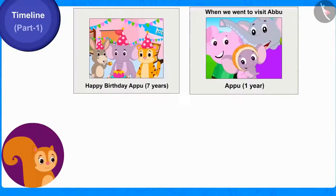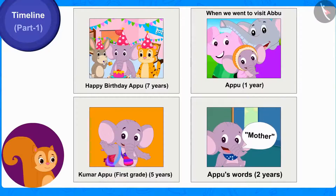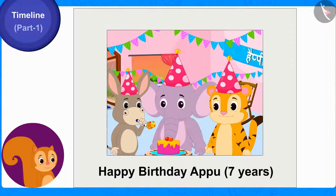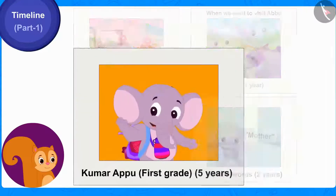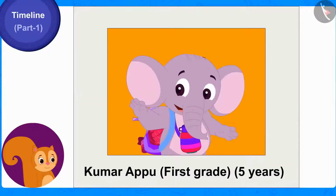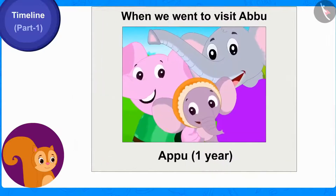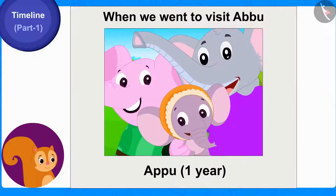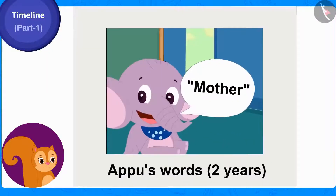Chanda removed four photos from Appu's album. In one picture, Appu is celebrating his seventh birthday. In another, Appu was in first grade. A third picture was taken when Appu was one year old and his parents had taken him on a trip to Abu. And the last picture was taken when Appu first started speaking the word 'mother' at the age of two.